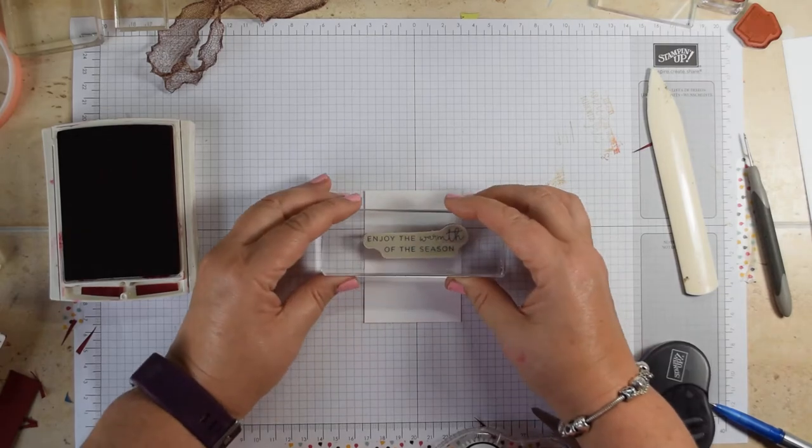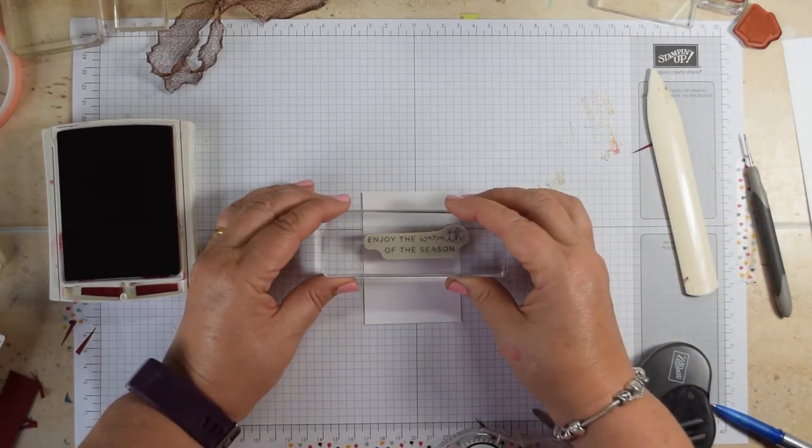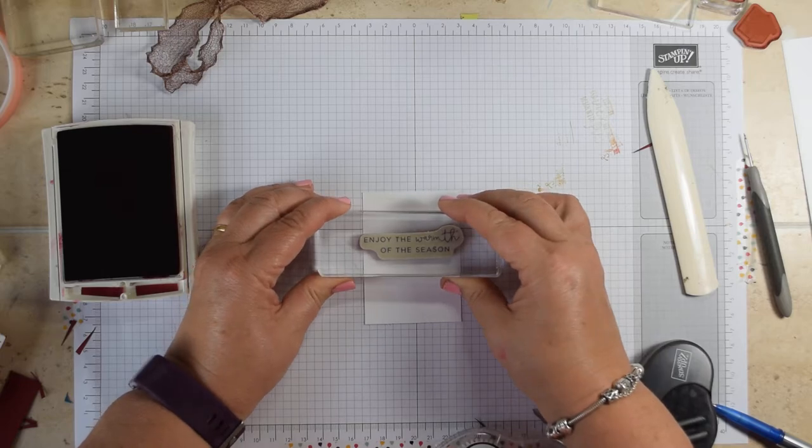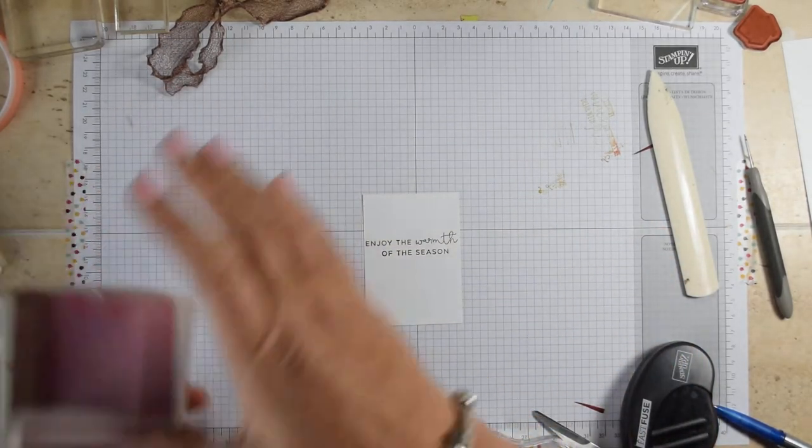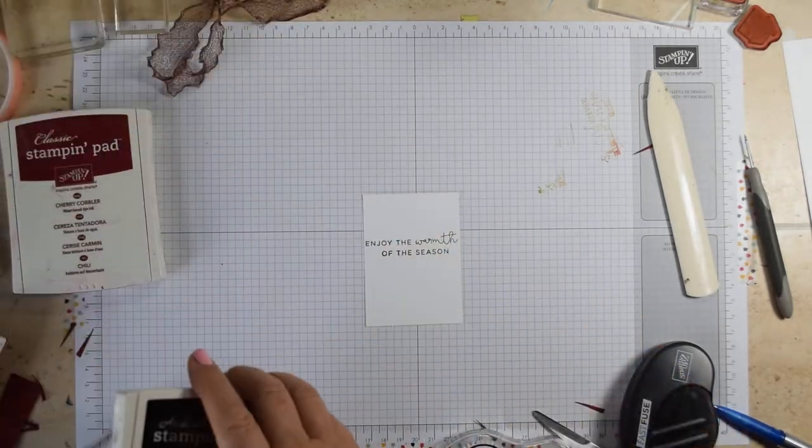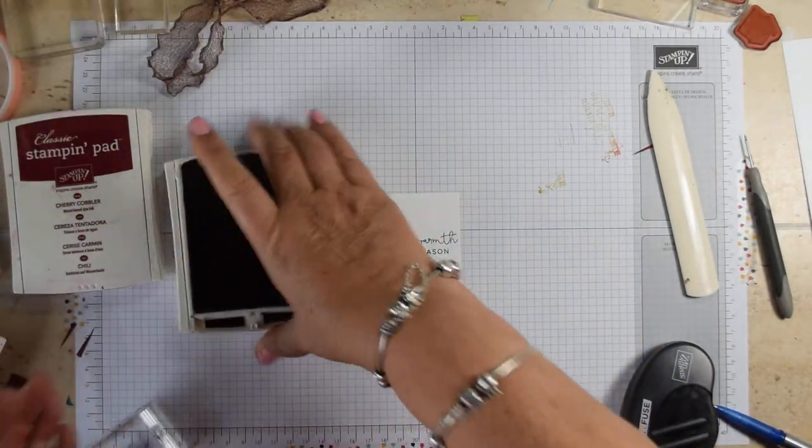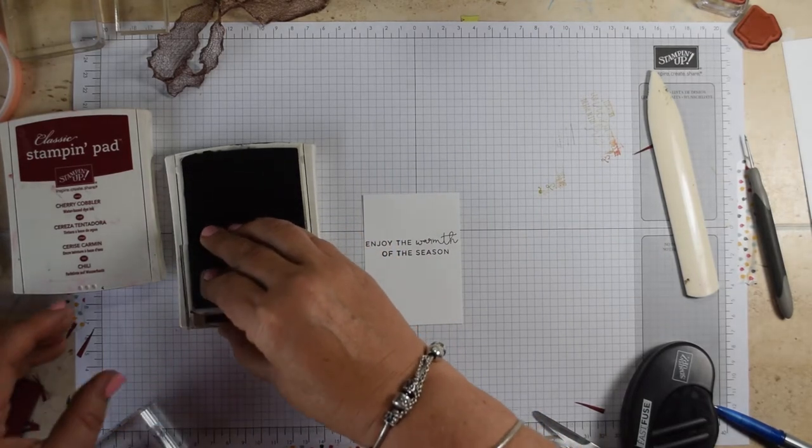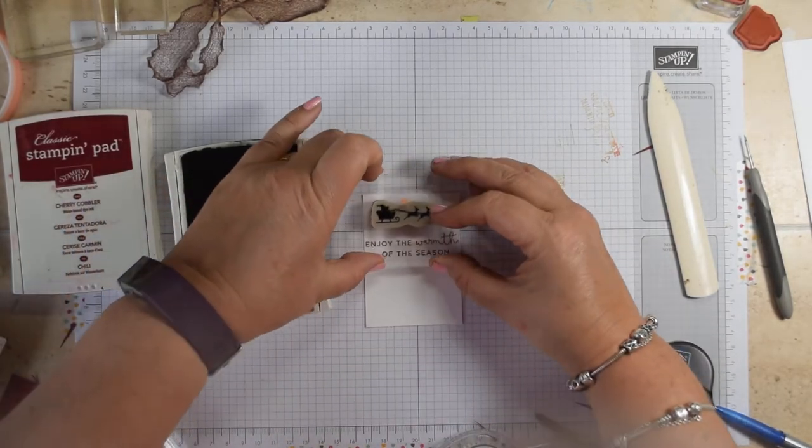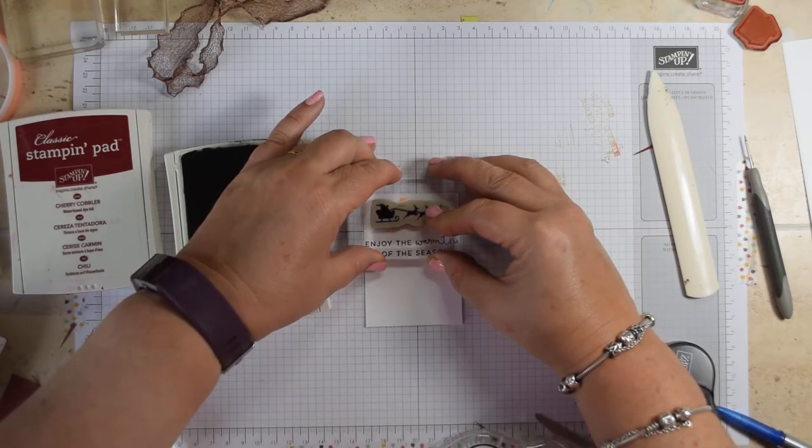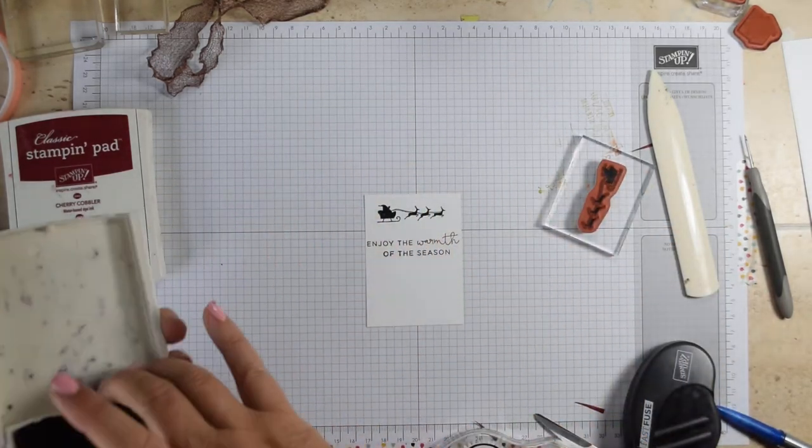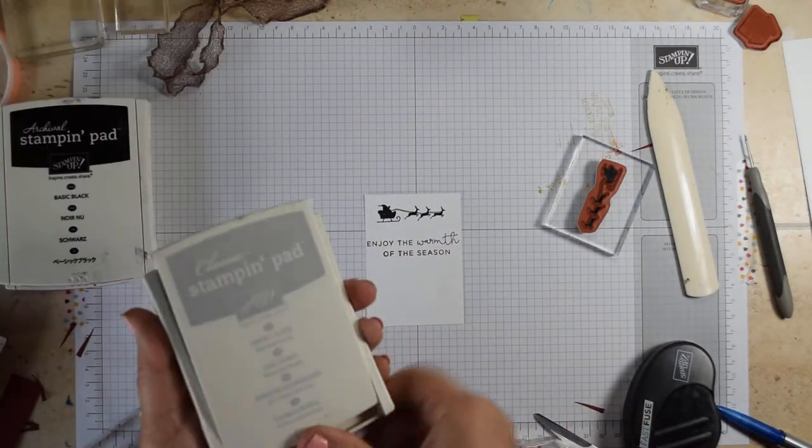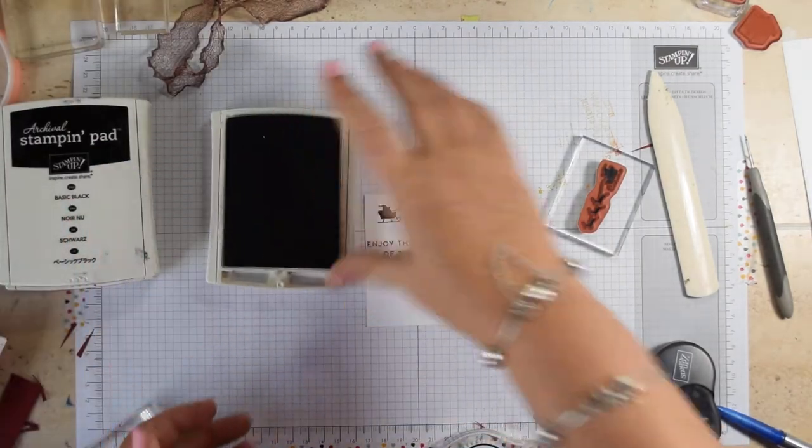So I'm just going to use some Cherry Cobbler ink and literally just pop that on there. And that's one of those beautiful Stampin' Up fonts where you've got that lovely handwriting and the printing. And then I'm going to use the Santa Slate on the top there with some archival black. There's a lovely black image. And then the very bottom, I'm going to do the houses in our smoky slate.